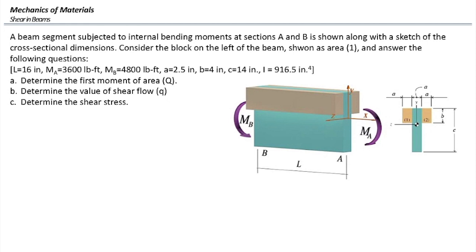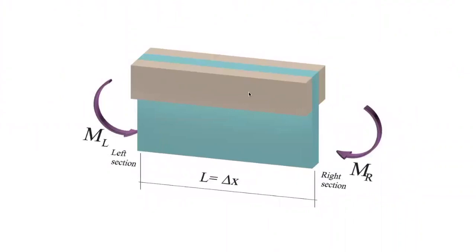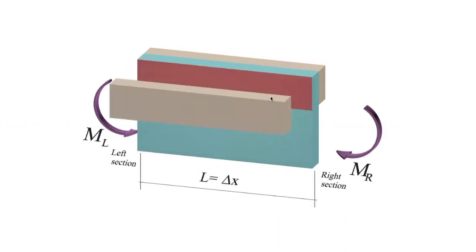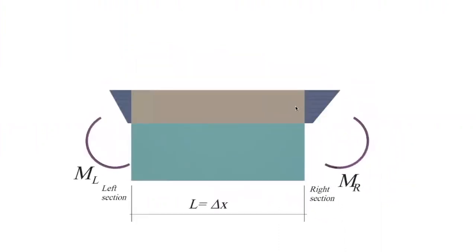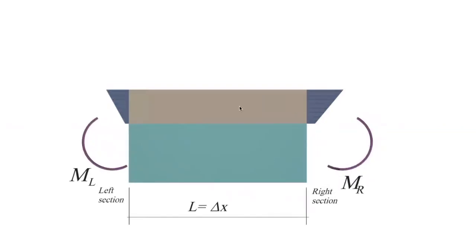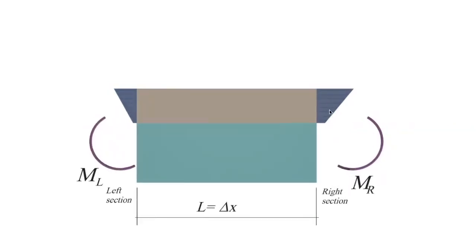In order to determine the first moment of area, or Q, we need to understand where Q comes from. I'm going to show the animation again to understand what area is required for the calculation of Q. Look at this beam subjected to moments on the sides. If we want to determine the balancing force, shear flow, and shear stress between the segment on the left side and the rest of the section, we separate that segment, and there are bending stresses acting on it. Because one moment is larger than the other, the stress distributions are unequal.